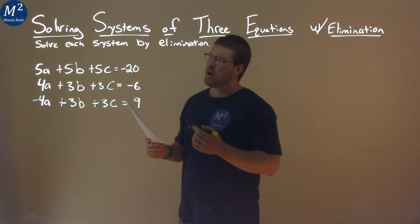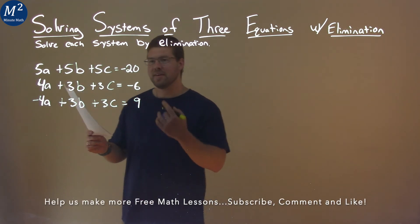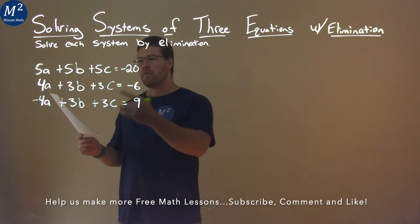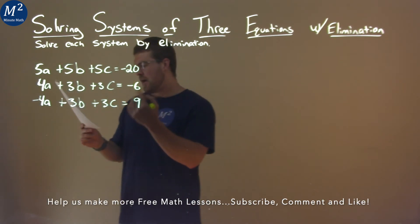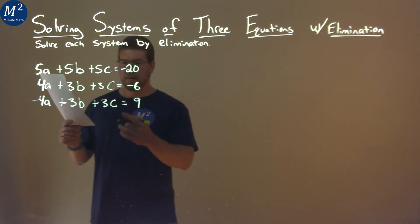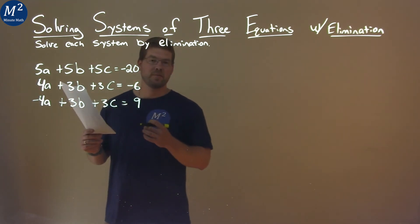We're given this problem right here: 5a plus 5b plus 5c equals negative 20, 4a plus 3b plus 3c equals negative 6, and negative 4a plus 3b plus 3c equals 9. We need to solve the system by elimination.